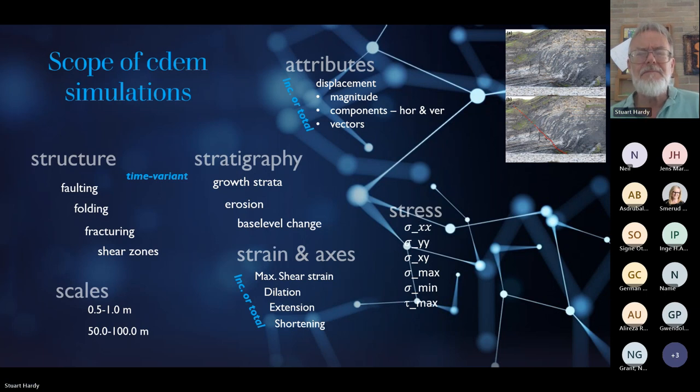So what can CDEM actually do? What are the types of boundary conditions and attributes that we might wish to look at? Obviously, structure and stratigraphy are our main concern as geoscientists. Both of these can be varied in a time sense. You can have tectonics that goes on and then off, pauses or inverts. Stratigraphy - we can add growth strata that can pause as well, or we can erode. Base level, essentially, it's accommodation. Where are we adding growth strata? Faults, fractures, shear zones - these all come out of the system naturally.